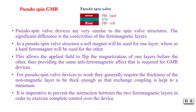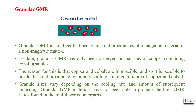Next is granular GMR. Granular GMR is an effect that occurs in solid precipitates of magnetic material in a non-magnetic matrix — like a composite, where the matrix is non-magnetic and the magnetic materials are the reinforcing material. Granular GMR has been observed in matrices of copper containing cobalt granules: copper is the non-magnetic matrix (shown in green) and cobalt granules are the magnetic material (shown in red).